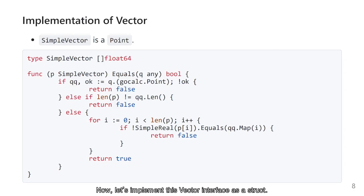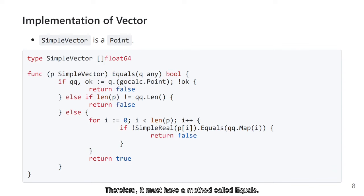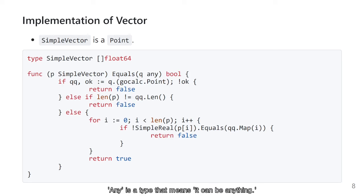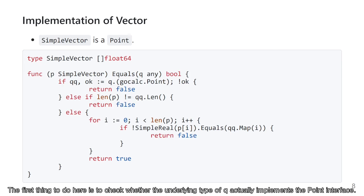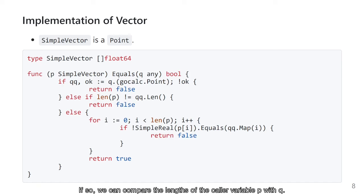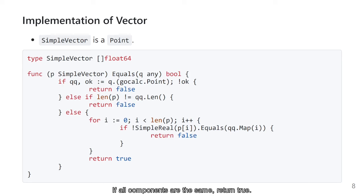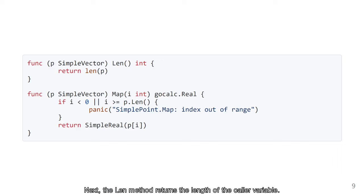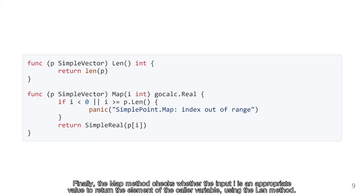Now, let's implement this vector interface as a struct. Here, I will redefine a slice of float64 as a type called simple vector. First, simple vector must be a point interface, so it must have a method called equals. This method takes an input variable q of type any — a type that means it can be anything. The first thing to do is check whether the underlying type of q actually implements the point interface. If so, we can compare the length of the caller variable p with q. If the two variables have the same length, compare each element in order. If all components are the same, return true. Next, the len method returns the length of the caller variable. Finally, the map method checks whether the input i is an appropriate value and returns the corresponding element of the caller variable using the len method.